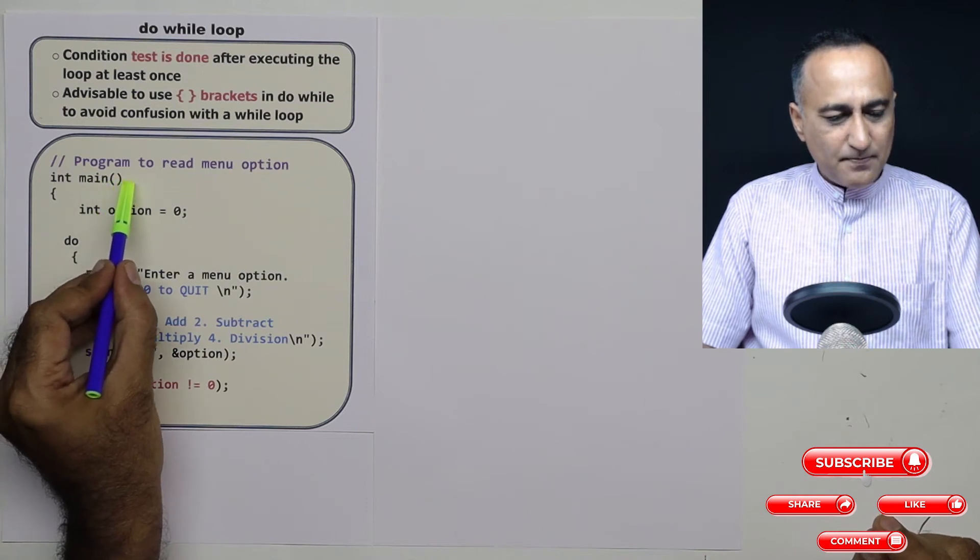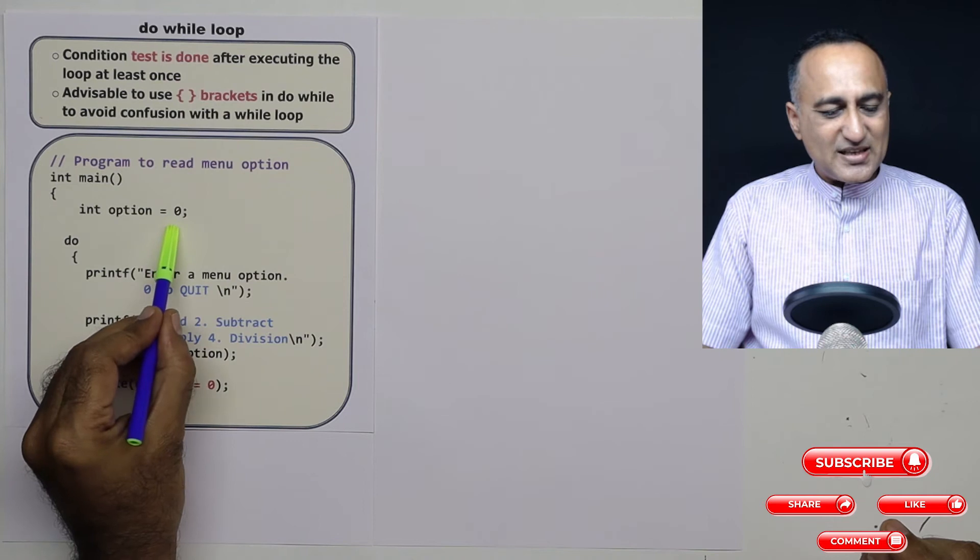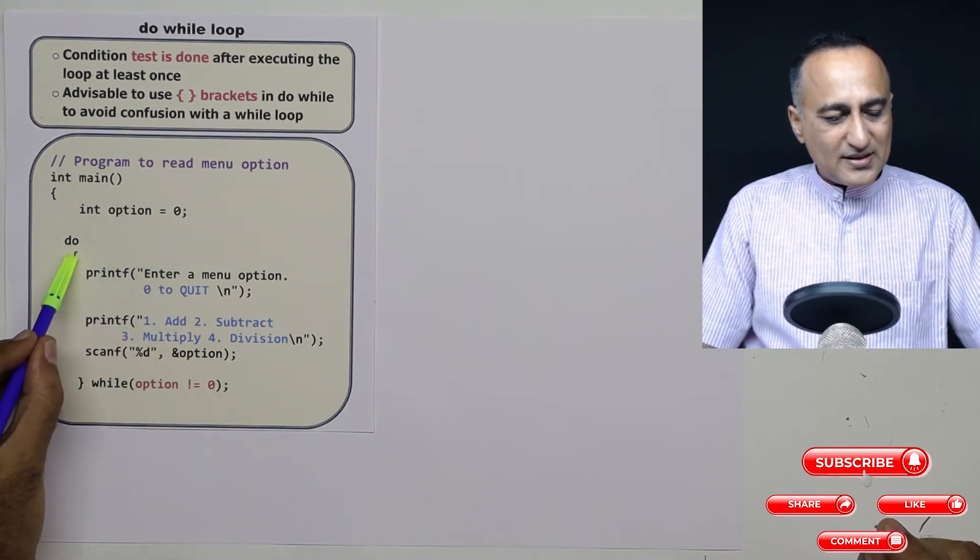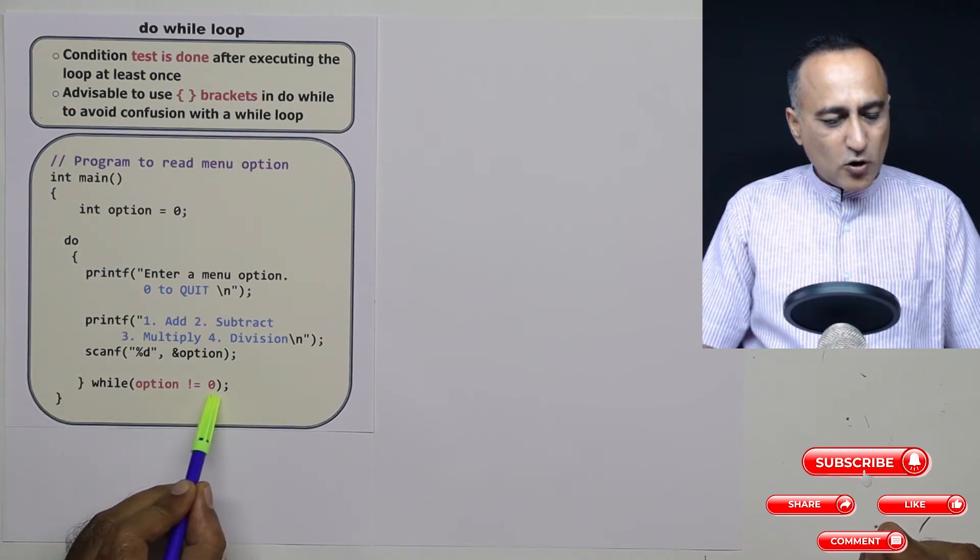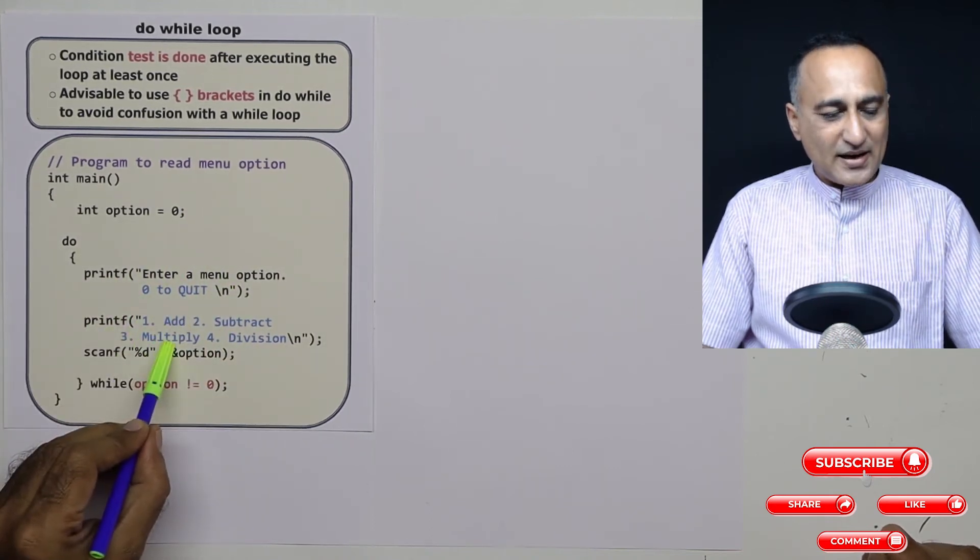So in this program, I'm going to read the menu option entered by the user. Option is zero. So what I'm doing here is I have do, this is the compound statement. What I've said is as long as the option is not equal to zero, keep running this loop again and again.